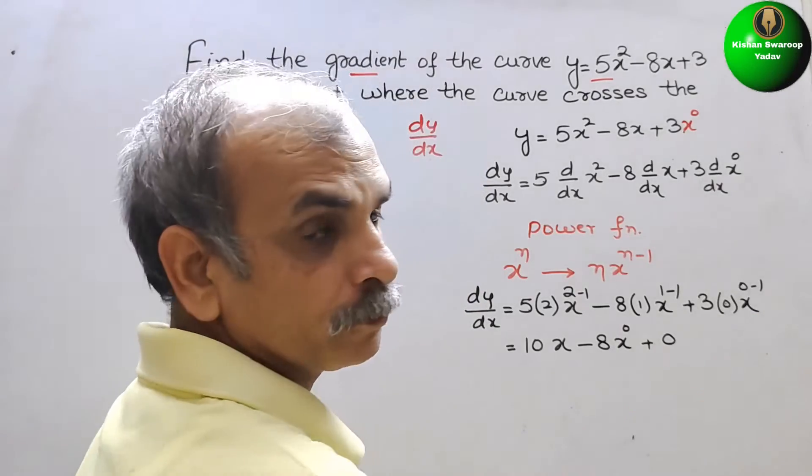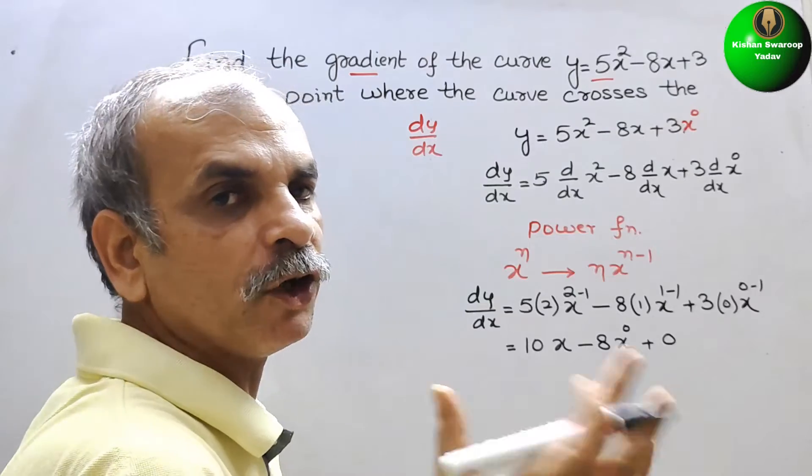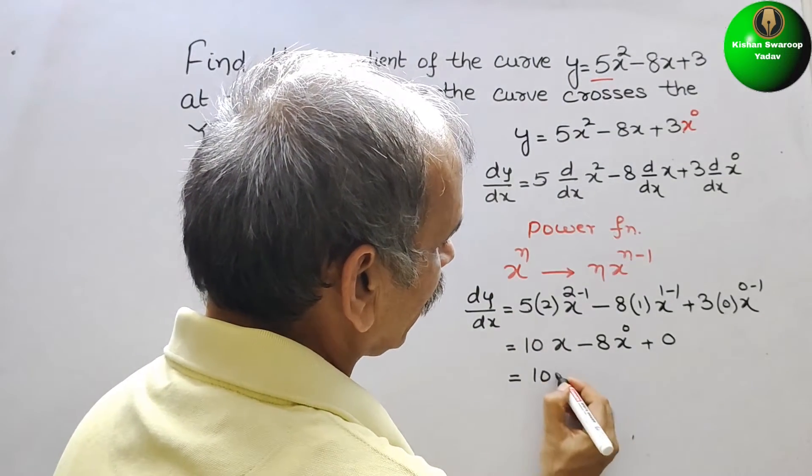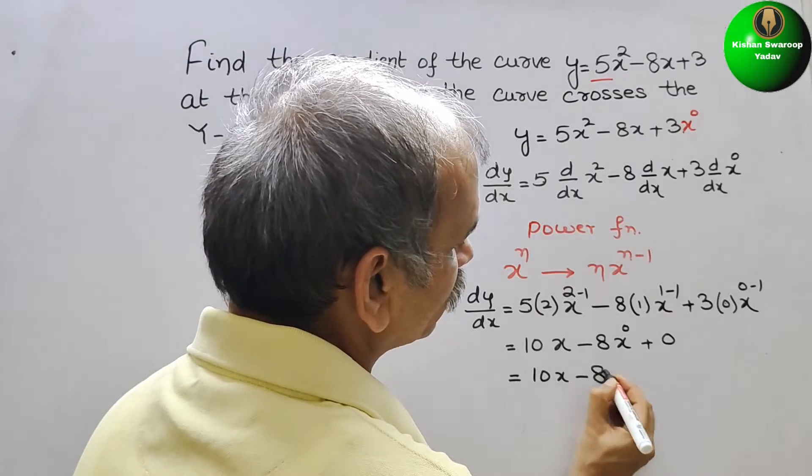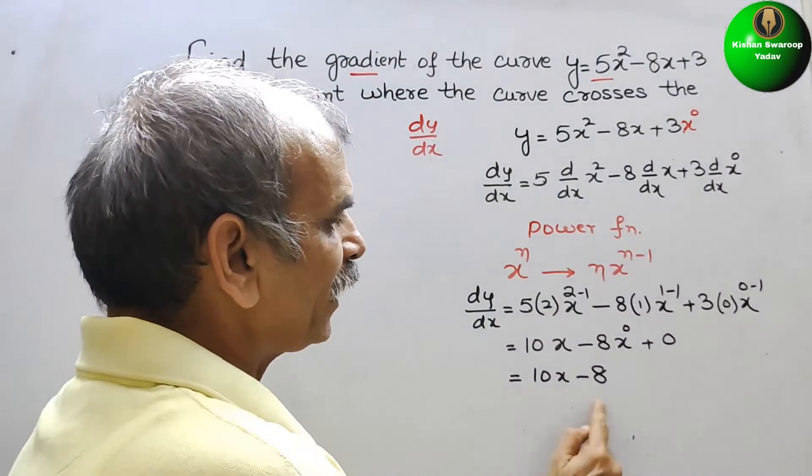3 into 0 is 0, so we know that any number whose power is 0 is 1. Therefore, we will get 10x minus 8, so this is your dy by dx.